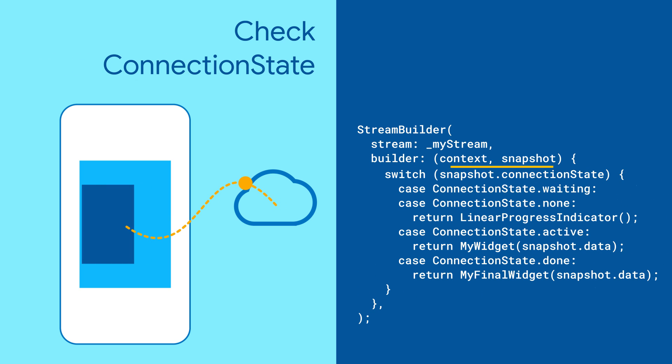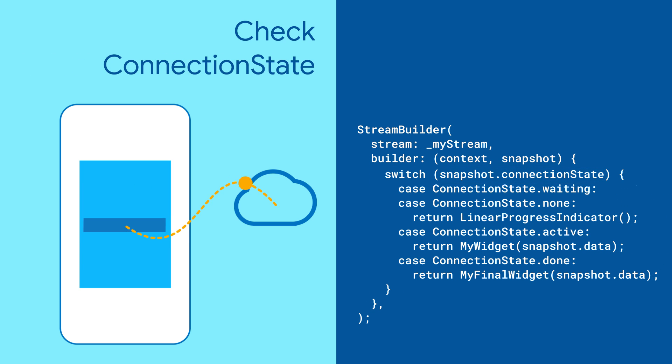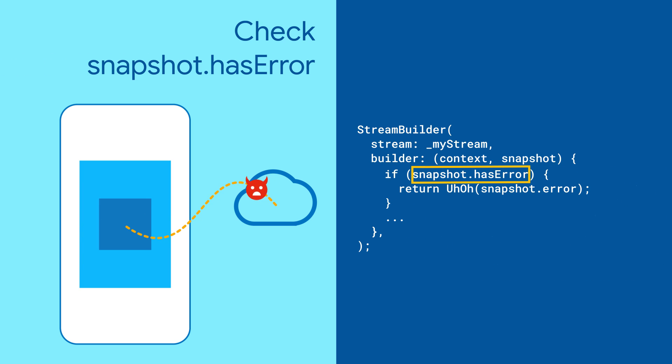For more granularity, check connection state. As always, check for errors — snapshot.hasError is your friend.